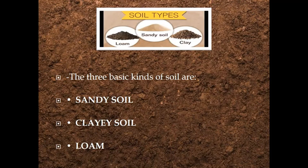We have learnt the composition of soil. Now we will have a look at the types of soil. There are three basic kinds of soil: sandy soil, clayey soil, and loam. Most soils are made up of sand, silt, and clay. The color and quality of a soil depends on how much silt, sand, and clay are mixed in it. The best soil for plant growth is the one which has all three types of particles in the right mix.